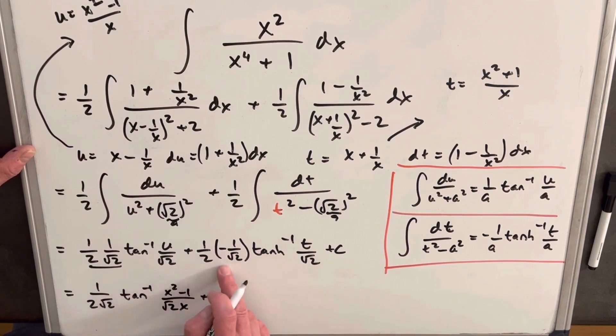And then here, plus, this is actually we have this minus, so let's change this to a minus. 1 over 2 square root of 2, tanch inverse.